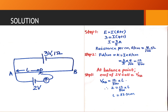In order to get the balance length L, we need to first calculate the current produced by the driver cell. We use the formula: EMF equals current times the sum of external resistance plus internal resistance. Substituting all the known quantities, we get the current I as equal to 3 over 5 amps. The resistance per centimeter of the wire is 4 over 100, since the whole wire has a resistance of 4 ohms and the wire is 100 centimeters long, so the resistance for each centimeter is 4 divided by 100.